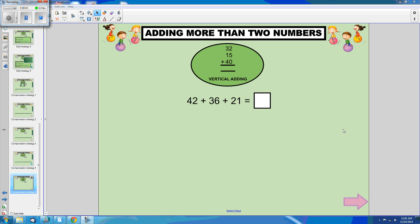When we are adding vertically, we just need to rearrange the numbers and make sure that we line them up correctly so that our place value is in the right spot.